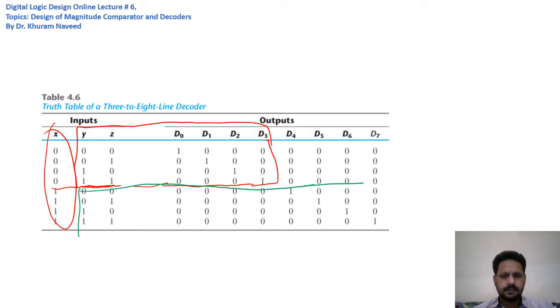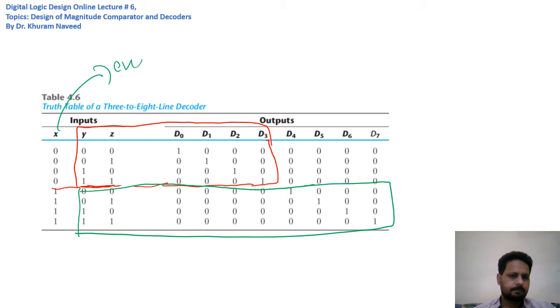this as another two-to-four line decoder, where x serves as an enable. This means we can make this three-to-eight line decoder